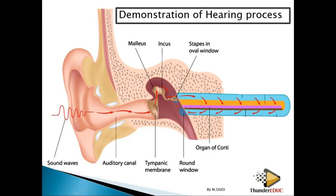Some pressure goes through this membrane and is then absorbed by the round window. That is why we say that the round window absorbs the excess pressure from the inner ear. That is basically how you need to explain it.